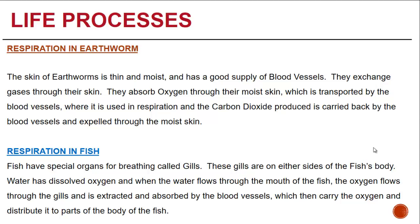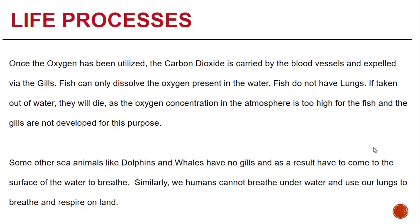Fish have special organs for breathing called gills, located on either side of the fish's body. Water containing dissolved oxygen flows through the mouth of the fish; oxygen flows through the gills and is extracted and absorbed by the blood vessels lining the gills, which distribute it to parts of the body. Carbon dioxide is then expelled by the gills. Fish can only use oxygen dissolved in water — they do not have lungs, and if taken out of water they will die.